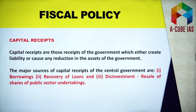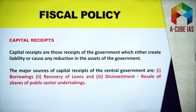Now disinvestment — this is a very recent source of capital receipt by which the central government has been mobilizing financial resources, and it has been happening since 1991. Prior to 1991, the central government owned 100% of the shares of public sector undertakings. After 1991, the government adopted the policy of privatization of PSUs, and consequently started selling its shares to the general public and to financial institutions. This selling of shares of PSUs by the government is known as disinvestment of PSUs.